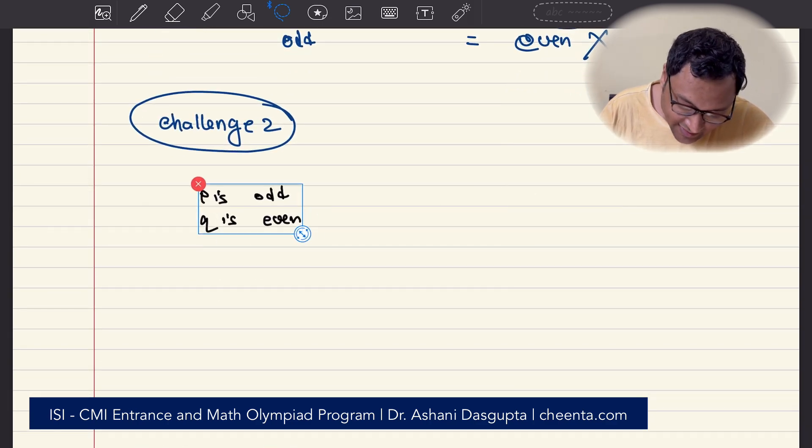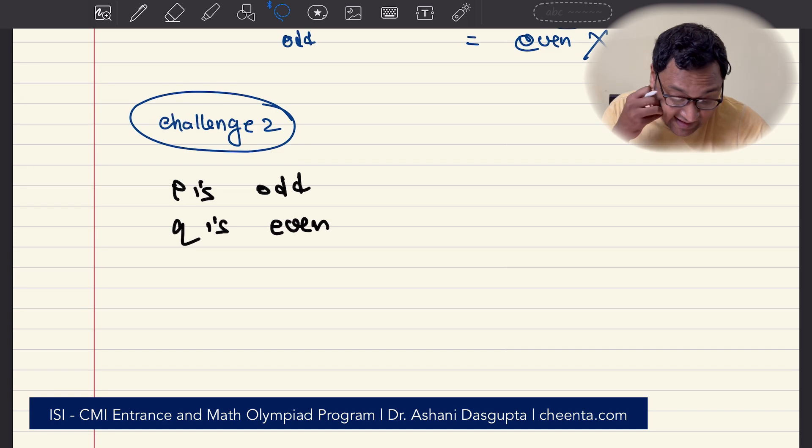The second case is P is odd, Q is even. Can you analyze the second case and give me an argument why you will get a contradiction here? I think you can easily do this.